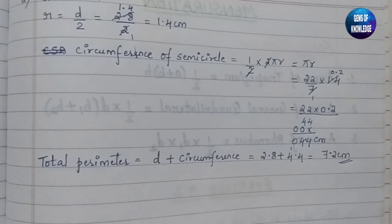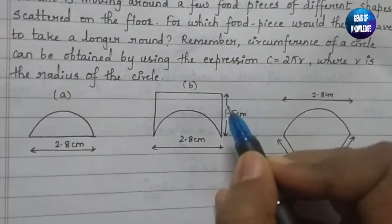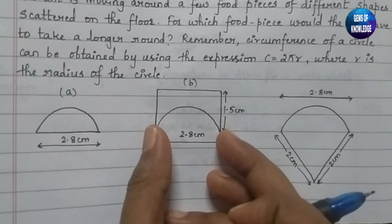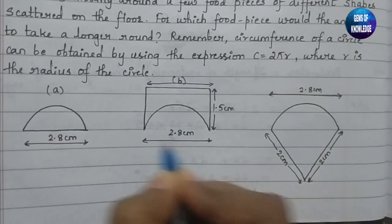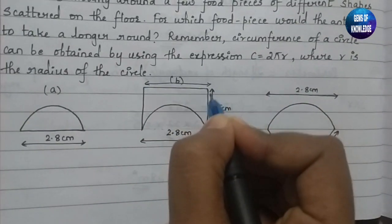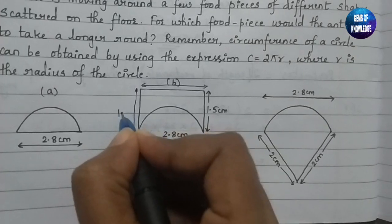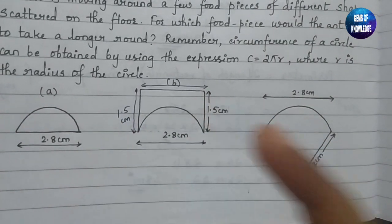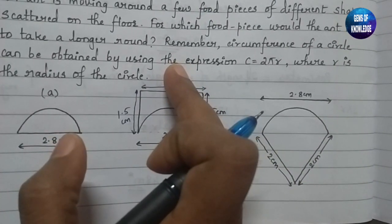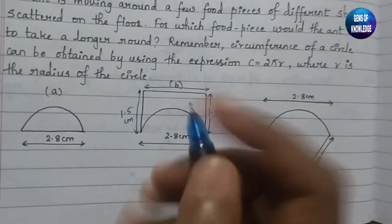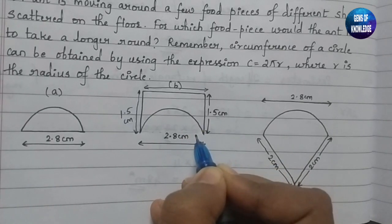Now let us consider figure B. The bottom part is given as 2.8 cm, so the top part is also 2.8 cm. The side is given as 1.5 cm, so the other side is also 1.5 cm. We need to add 2.8 cm, plus 1.5 cm, plus 1.5 cm, and this half semicircle — which we already found to be 4.4 cm.